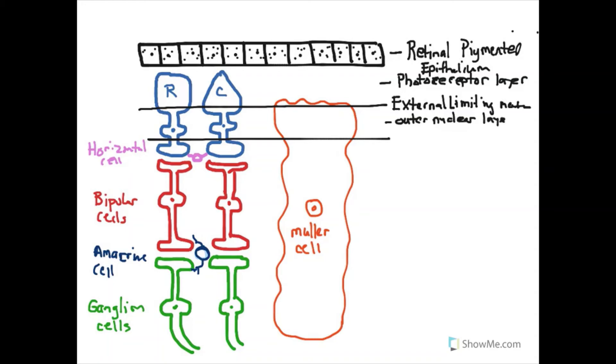That's going to contain the nuclei of your rods and cones, your photoreceptors. Then what we're going to do is we're going to move down just below this and then just above right about here, and we have what is called an outer plexiform layer.